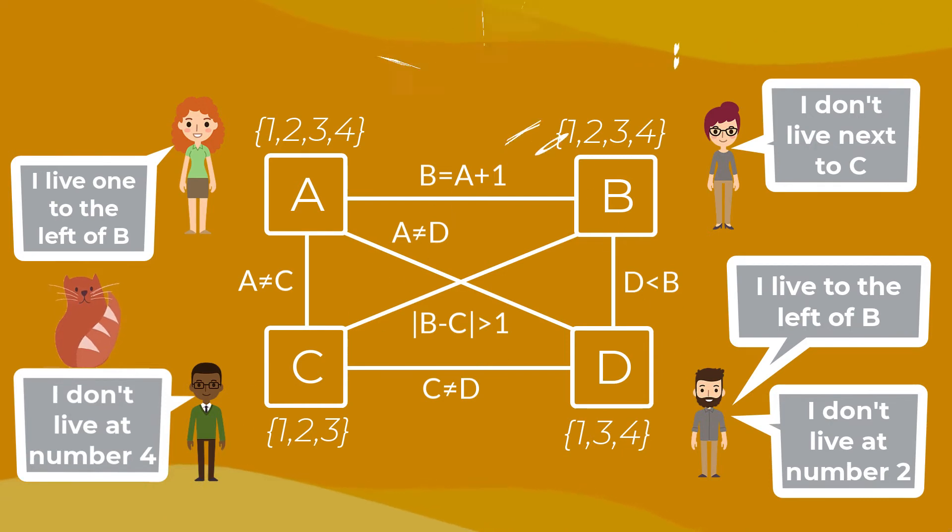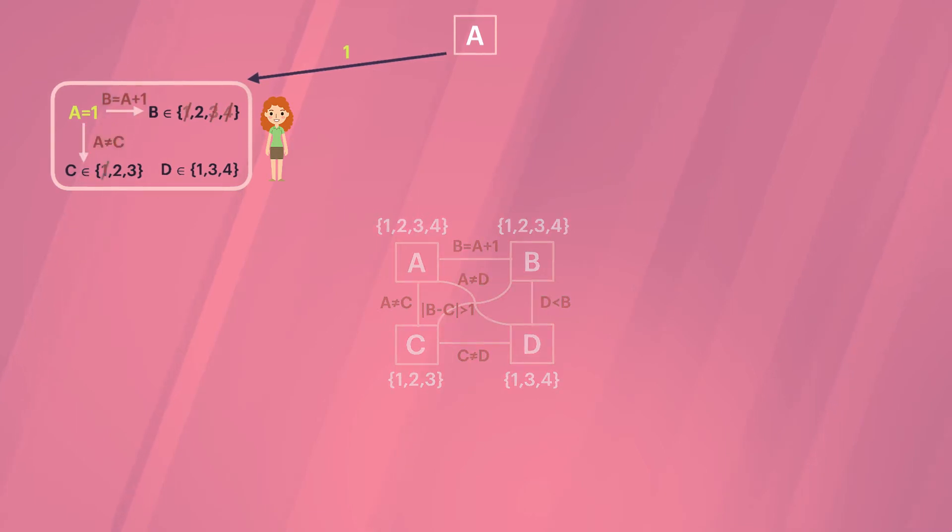So we have a network. Let's use it with forward checking. Picking letters and numbers in order, the first choice is A equals 1. A has three constraints, so we can update the domains of B and C and D.